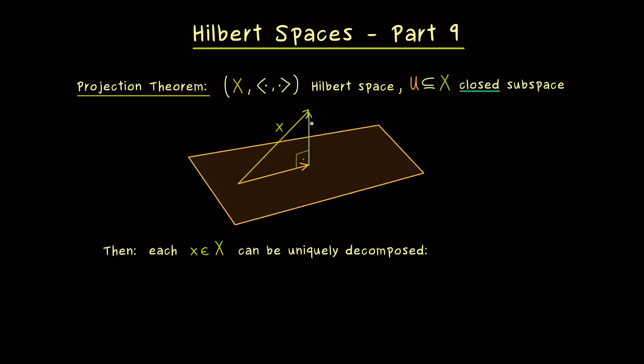there is also only one orthogonal projection of x onto U, which means this decomposition here is uniquely given. So let's put it into a formula, we can write x as a linear combination of two vectors. The first vector is a vector p in U and the other one is a vector n in the orthogonal complement.